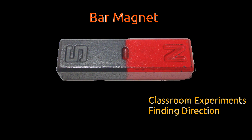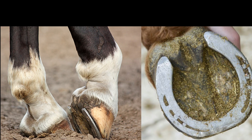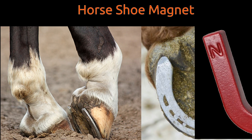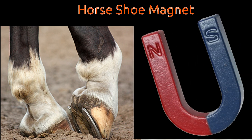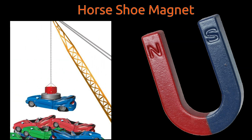Magnets can be made in the shape of the foot of a horse. These magnets are called horseshoe magnets. Horseshoe magnets are used in magnetic cranes, which are used in lifting magnetic materials.